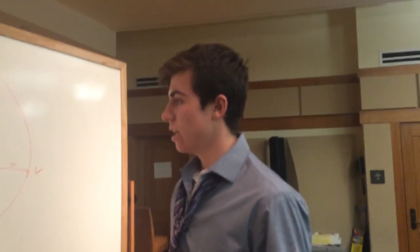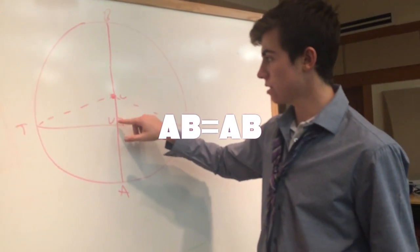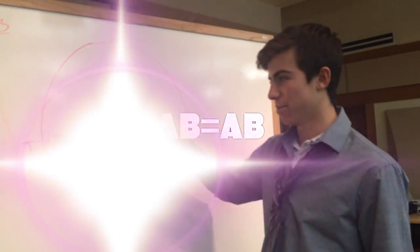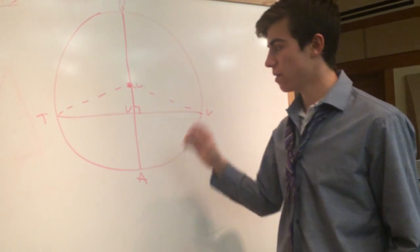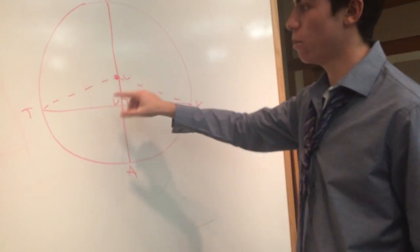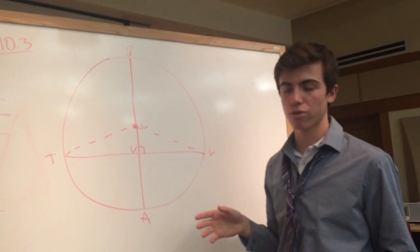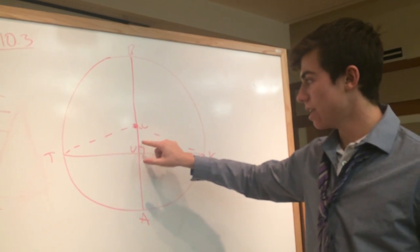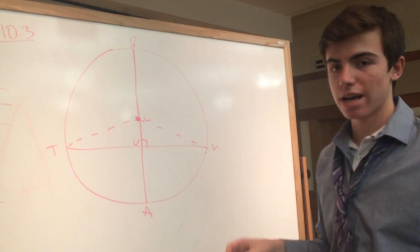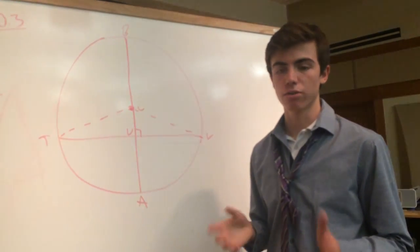Then I used the reflexive property because line UC is used in both triangles, so they're equal to each other. That way you have a side, a side, and an angle on both that are exactly the same. That's how you know it's a congruent triangle using SAS.